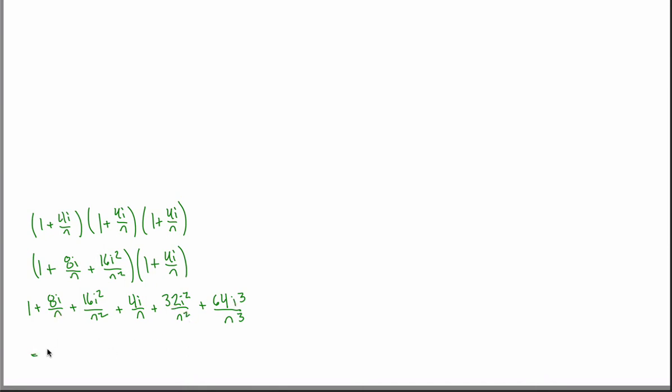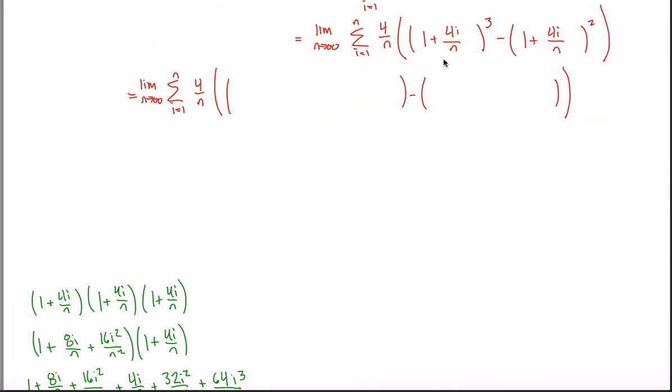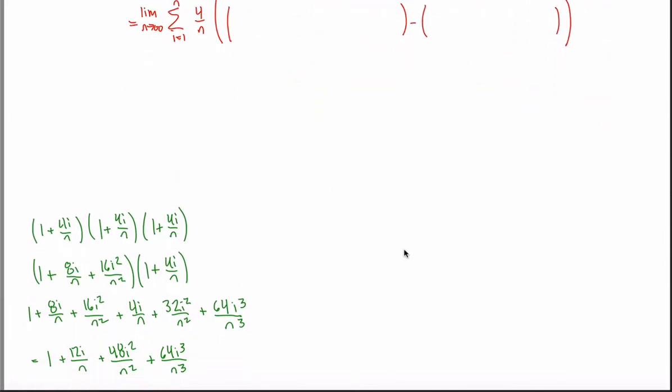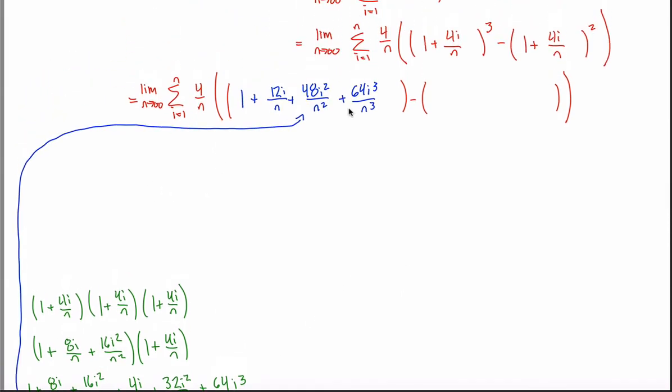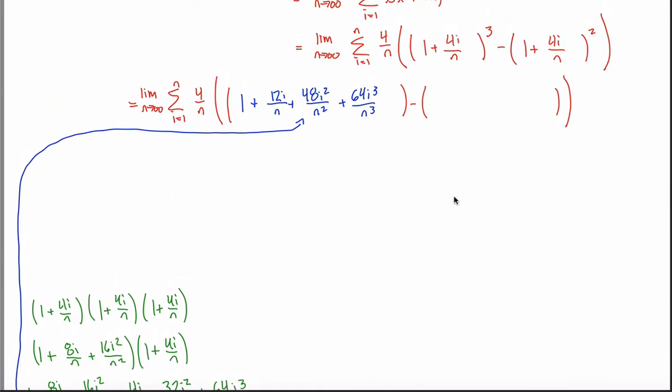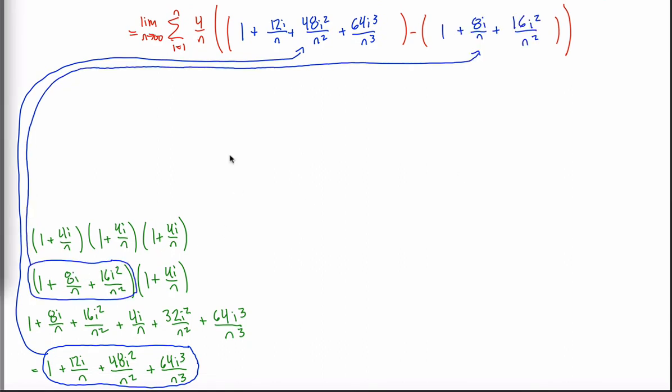That's this 1 times this term, this term, and this term. And then this 4i over n times each of these three terms. Well, let's see. 4i over n times 1 is just 4i over n. 4i over n times 8i over n. 8 times 4 is 32. So I get 32i squared over n squared. And then finally 16i squared over n squared times 4i over n. 16 times 4 is, what, 64? So I get 64i cubed i times i squared divided by n cubed. And then if you want to combine like terms, you can write them in increasing or decreasing order. It doesn't really matter. There's my 1, 8i over n, and 4i over n gives me 12i over n. And then for my squared, 16 and 32 gives me 48i squared over n squared. And then I only have this cubed term, 64i cubed over n cubed.